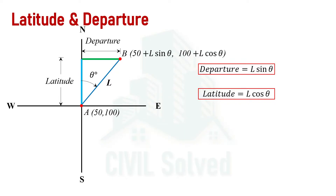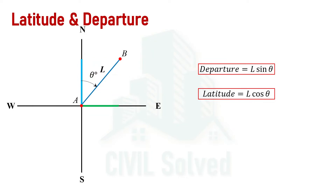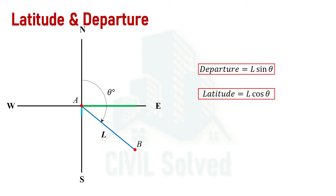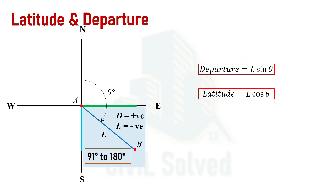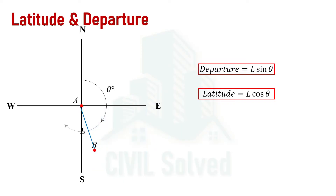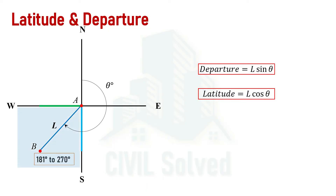This is how the coordinate of a forward point is calculated if we know the coordinate of the backward point, the length, and the bearing of the line. Now let's discuss how latitude and departure vary in different quadrants. In the north-east quadrant, bearing varies from 0 to 90 degrees — both latitude and departure are positive. In the south-east quadrant, bearing varies from 91 to 180 degrees — departure is positive but latitude is negative, because we are moving rightward but vertically downward.